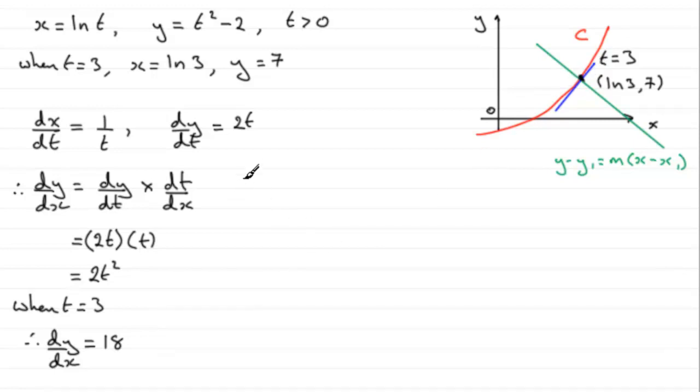So we now have that therefore, the gradient of the normal must be the negative reciprocal of that. So just write this introduction here, the gradient of the normal equals minus 1 over 18. And so therefore,